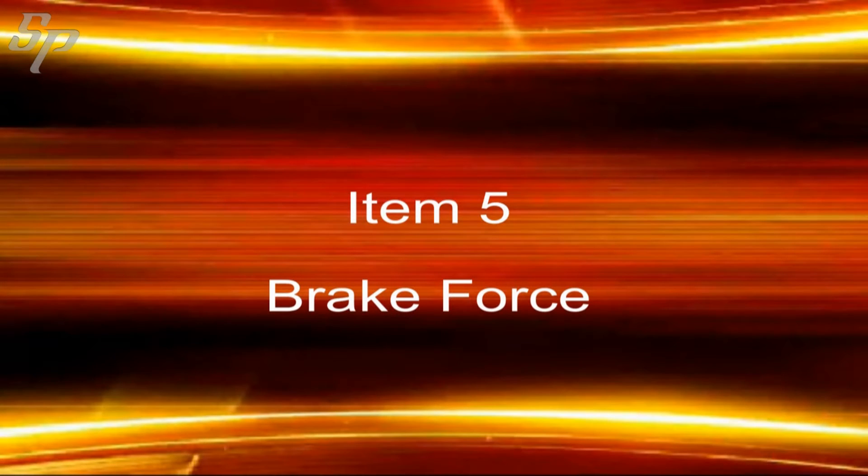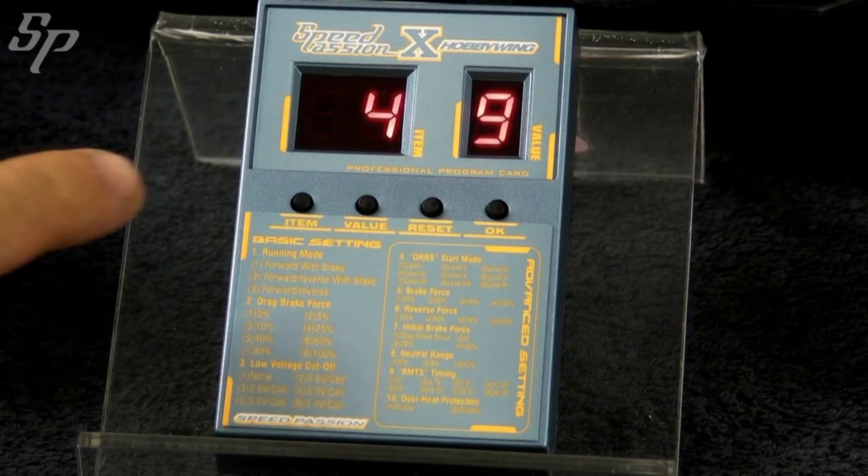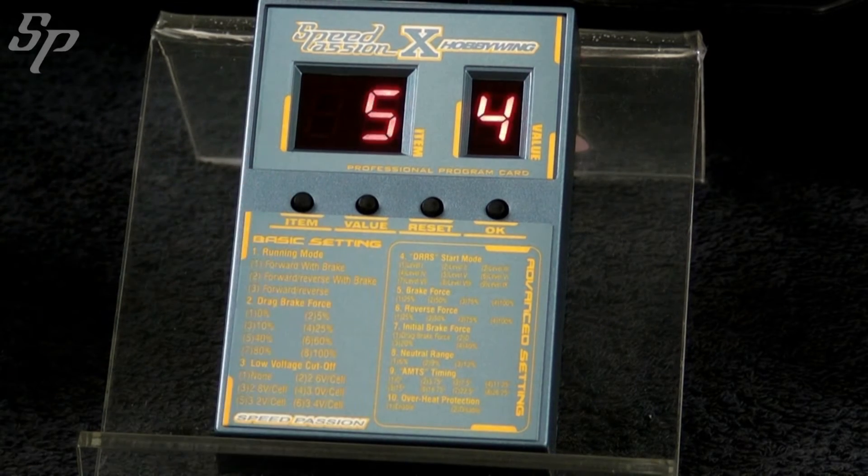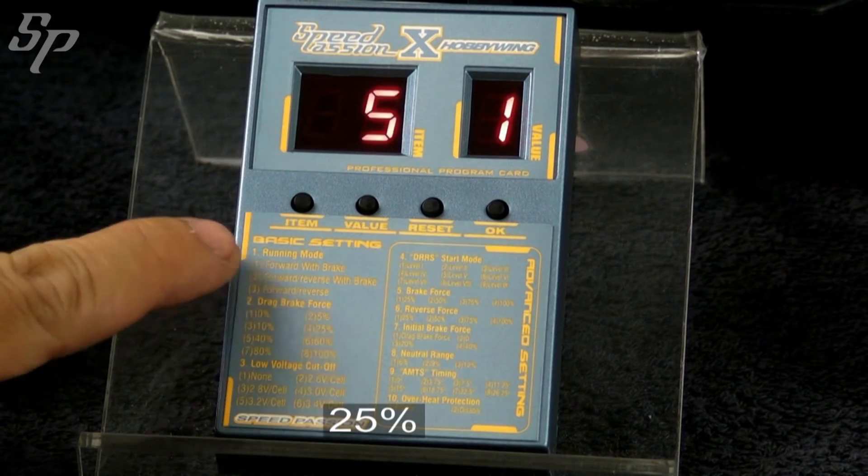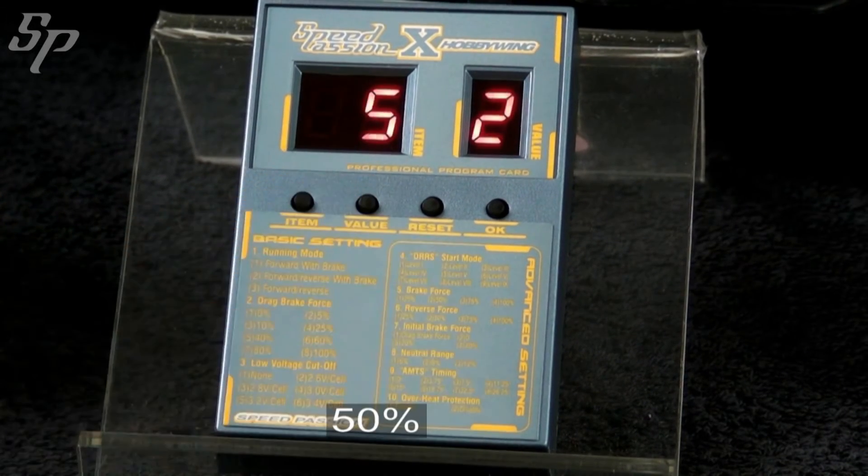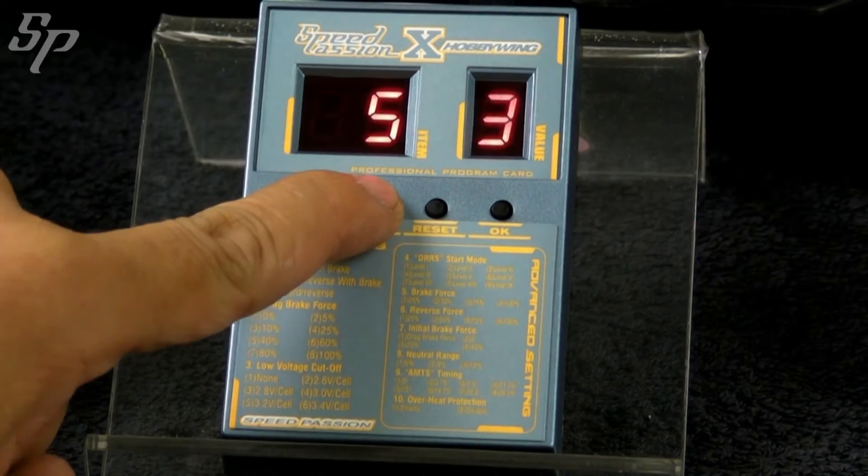Item 5 is the brake force. It is all about the force to exert when the brake is applied. The higher the value, the larger the reverse force.